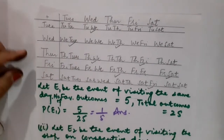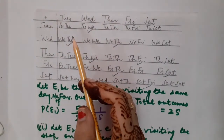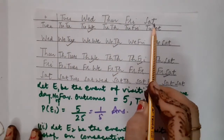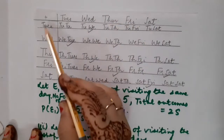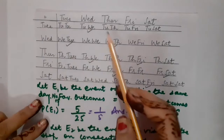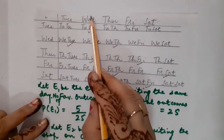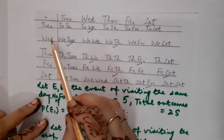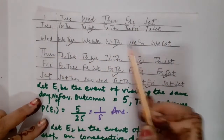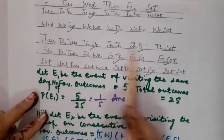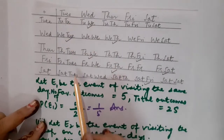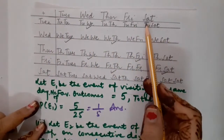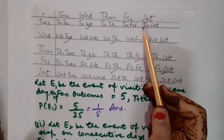It would be better to make a table since we are dealing with two people again. I have written Tuesday to Saturday for Ekta in rows and for Shyam in columns. The possible outcomes are: (Tuesday, Tuesday), (Tuesday, Wednesday), ..., (Tuesday, Saturday), (Wednesday, Tuesday), and so on, all the way to (Saturday, Saturday). They total 25 in number, so the total number of possible outcomes is 25.